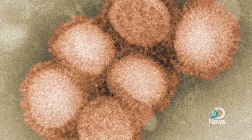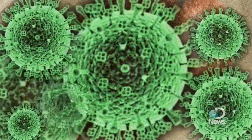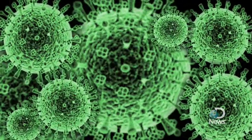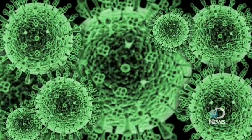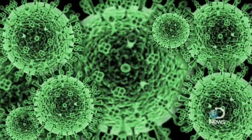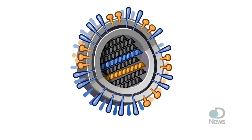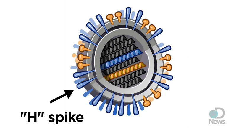An influenza virus particle is roughly round in shape, with two types of protrusions — one that is more of a spike and one that is more of a propeller shape. The H spike is used to enter a cell, and the N spike is used to actually get away from a cell.